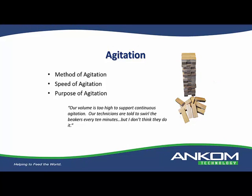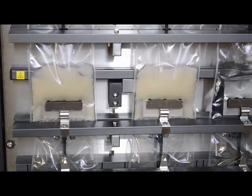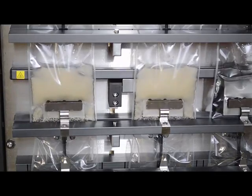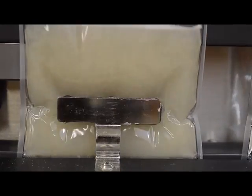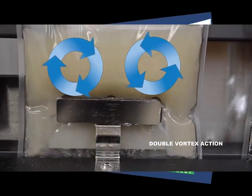Agitation is an important element because during the enzyme digestions you want the sample to have a lot of surface area — suspended throughout the liquid — in order for the enzymes to do their job. The methods have different callouts for the type of agitation. Some are very specific and state revolutions per minute; some just say continuous or periodic agitation. As different labs do different things, it could be a problem. I had one customer that said agitation alone justified the automated system because currently they could not agitate samples and told technicians to every 10 minutes swirl the beakers out of the water bath. If the sample is not fully suspended, it's going to impact the results.